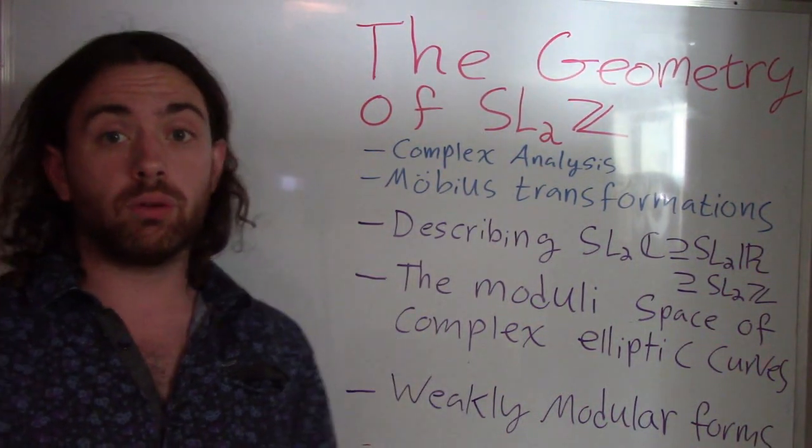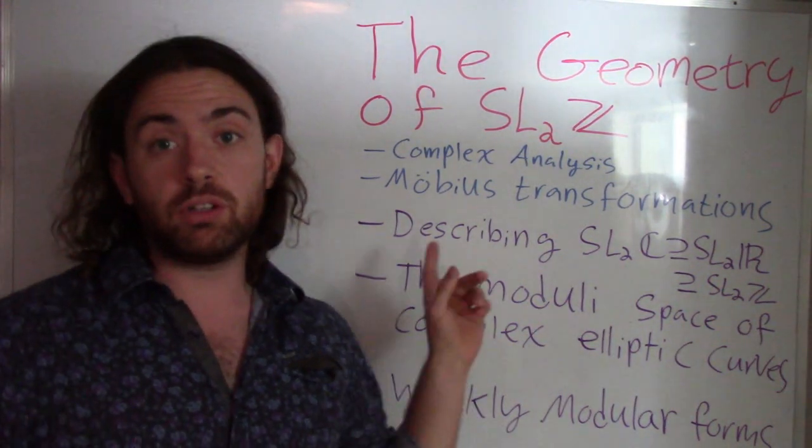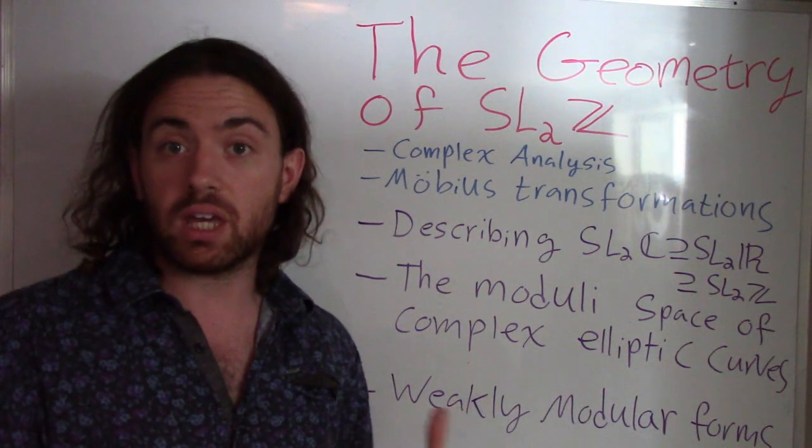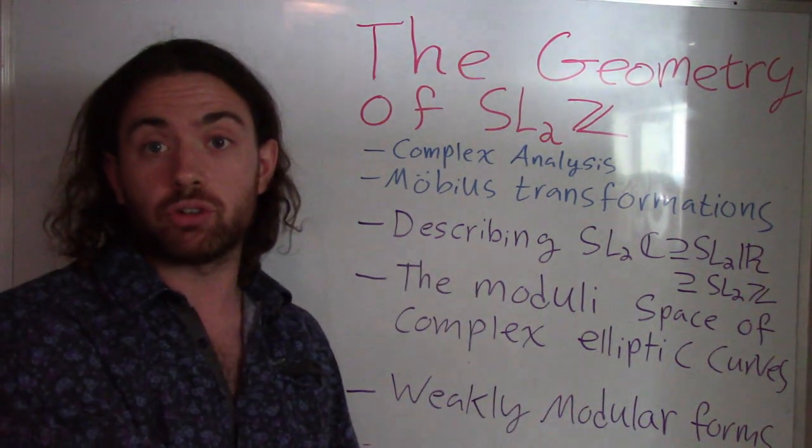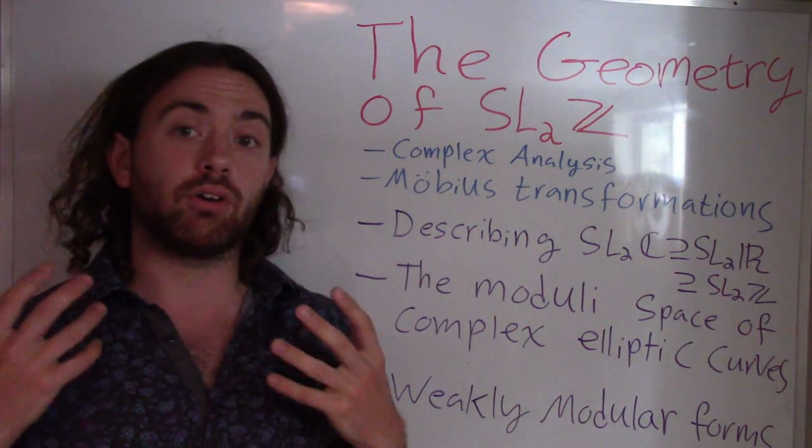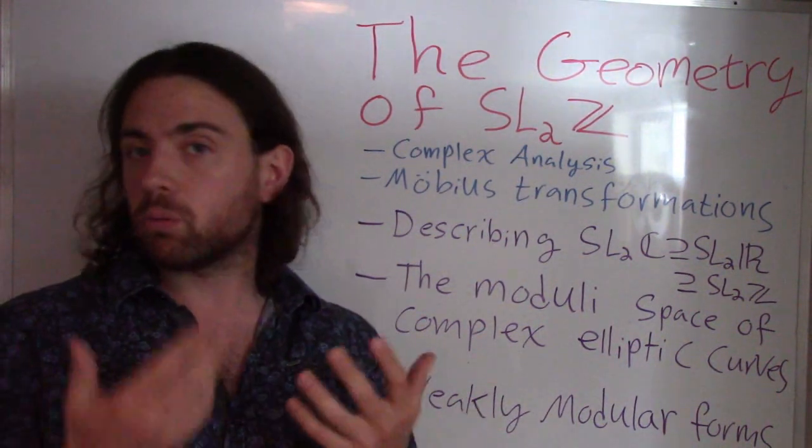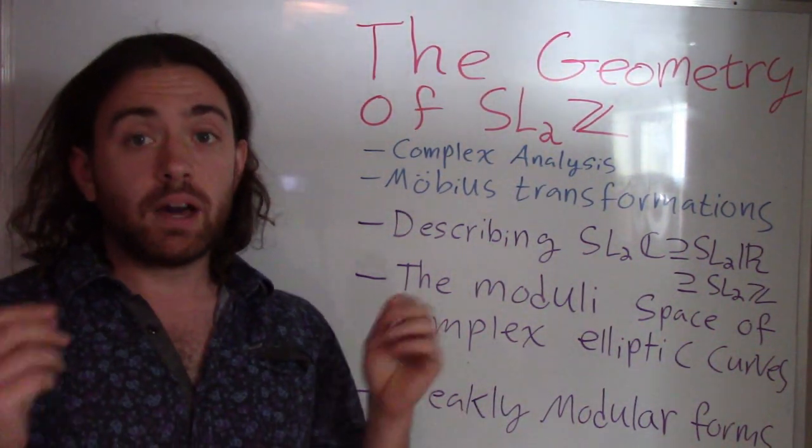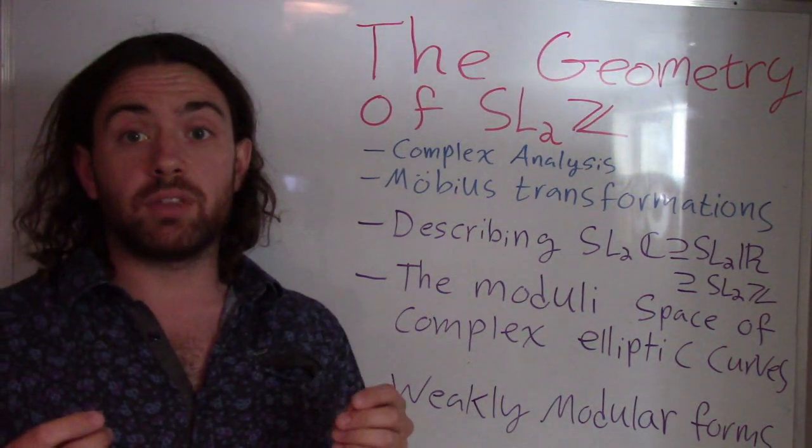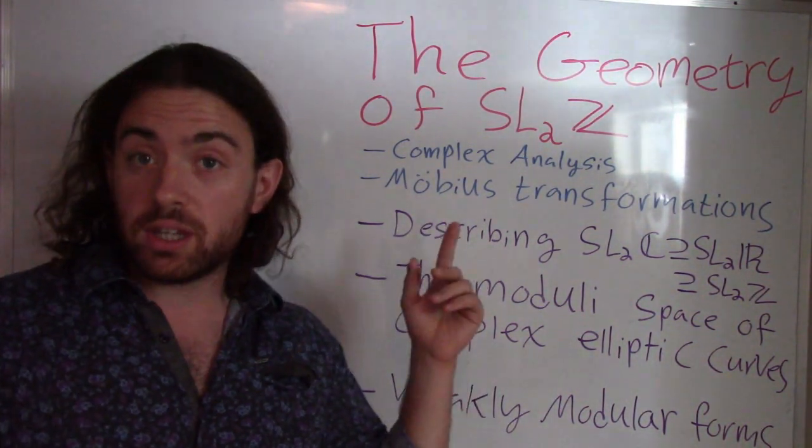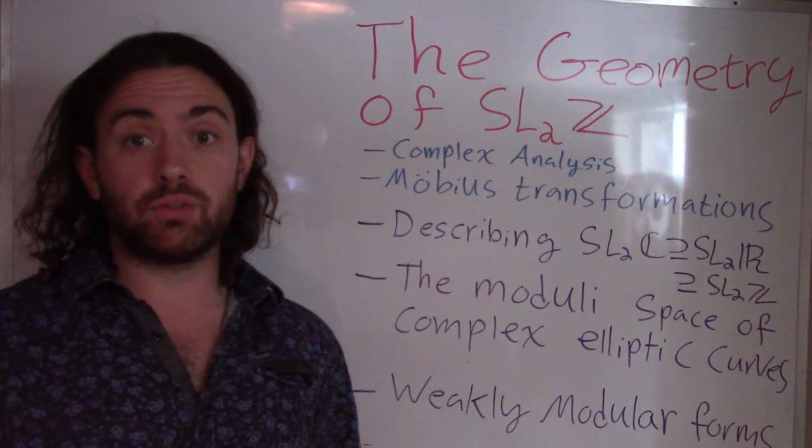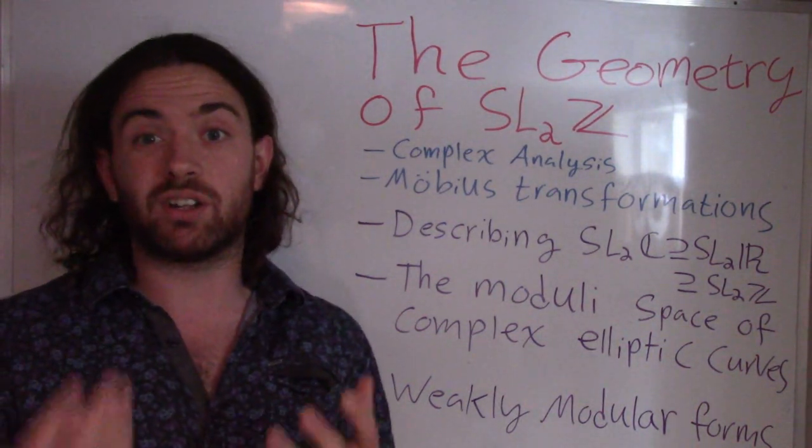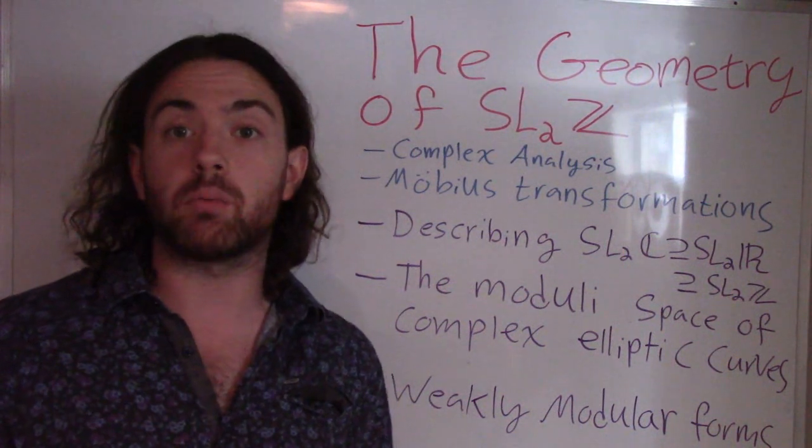So in the first video, today's video, we're going to be describing the actions of two different groups, SL2Z and a subgroup of it, and how it acts on the complex plane, or more specifically the complex Riemann sphere. That will lead us to wanting to describe the action of SL2Z, which is going to be in the second video, because proving things and getting into the nitty-gritty of it is going to take a little bit more work and a bit more time.